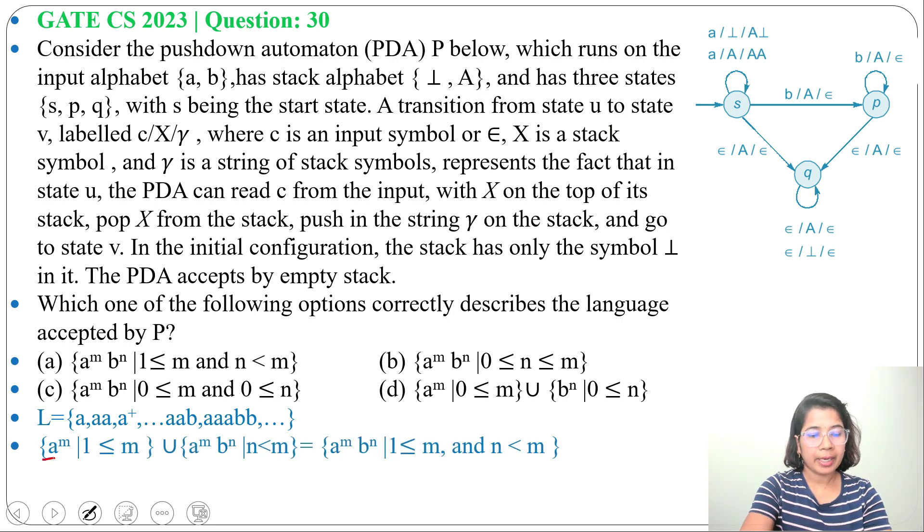So what will be the language? A power M where M value should be greater than or equal to 1, means at least 1 A or any number of A. Union A power M B power N, where N value should be less than M.